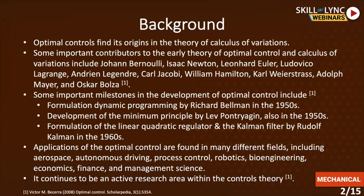Some important contributors include Johann Bernoulli, Isaac Newton, Leonard Euler, Lagrange, Legendre, Jacobi, Hamilton, Weierstrass, Mayer, and Bolza. Some other important milestones in the development of optimal control include the formulation of dynamic programming by Richard Bellman in the 1950s, the development of the minimum principle by Lev Pontryagin also in the 50s, and the formulation of the linear quadratic regulator and the Kalman filter by Rudolf Kalman in the 1960s.